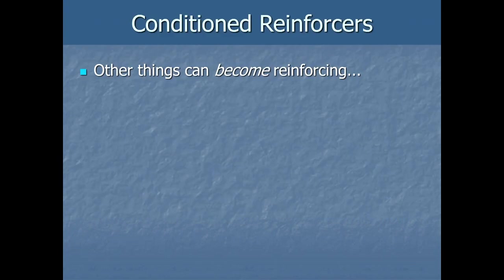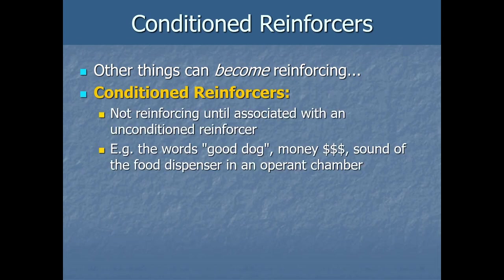Other things can become reinforcing that weren't naturally reinforcing before — we can create reinforcers out of previously neutral things. We call those conditioned reinforcers. In Pavlovian conditioning terms, this is basically just a CS — a conditioned stimulus that has become a reinforcing stimulus. These are learned reinforcers; they weren't reinforcing until they were associated with some unconditioned reinforcer — things we connect to food, water, sex, touch, play, and other naturally rewarding things.